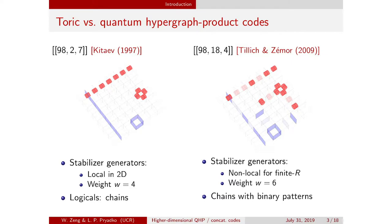What I want to do is to generalize the class of hypergraph product codes to be similar to higher dimensional Tori codes, which would allow this construction to give us redundant checks. Tricks like high accuracy stabilizer measurements, or what is called single shot decoding, would be possible.